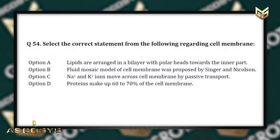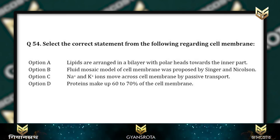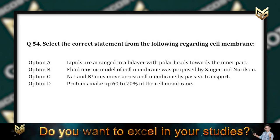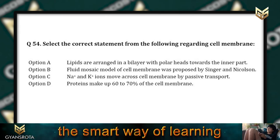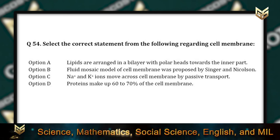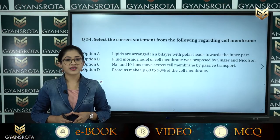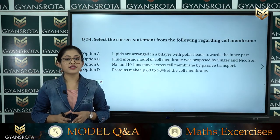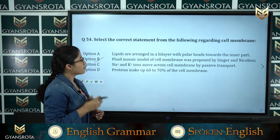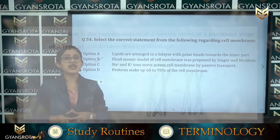Question 54: Select the correct statement regarding the cell membrane. Option A: Lipids are arranged in a bilayer with polar heads towards the inner part. Option B: Fluid mosaic model of cell membrane was proposed by Singer and Nicholson. Option C: Sodium and potassium ions move across cell membrane by passive transport. Option D: Proteins make up 60–70% of the cell membrane. The correct answer is option B.